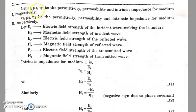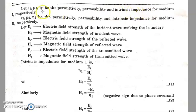Let epsilon1, mu1, and eta1 be the permittivity, permeability, and intrinsic impedance for medium 1. The intrinsic impedance, as we studied in previous lectures, is the ratio of E to H — that is, the magnitude of E divided by the magnitude of H — and it has the units of ohms.